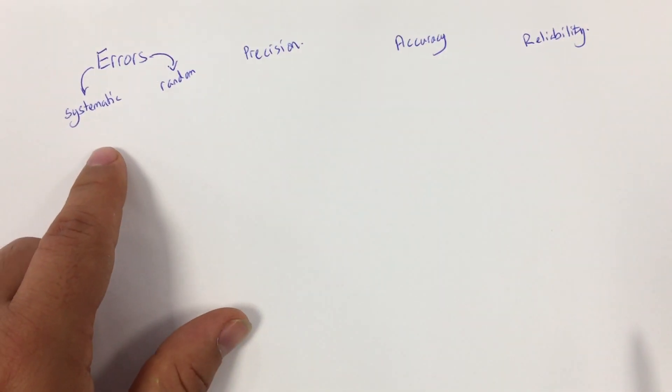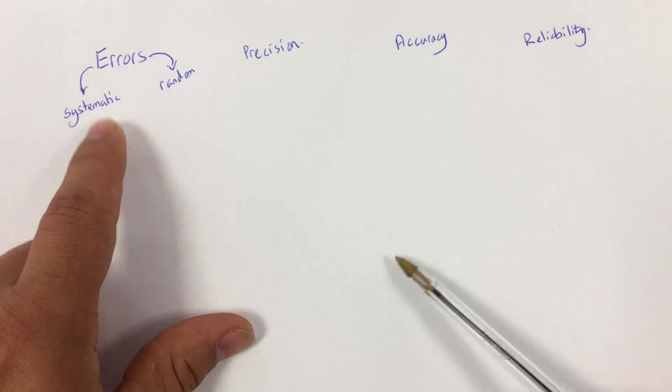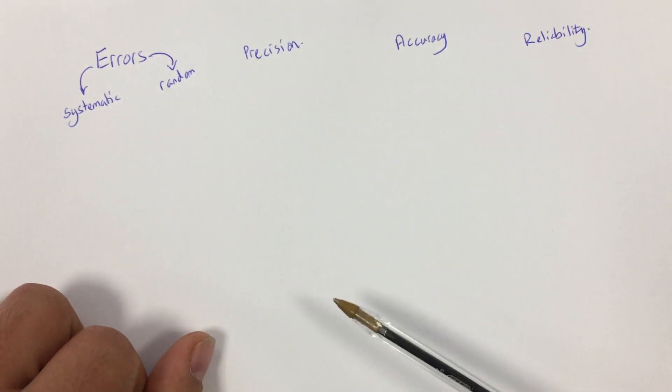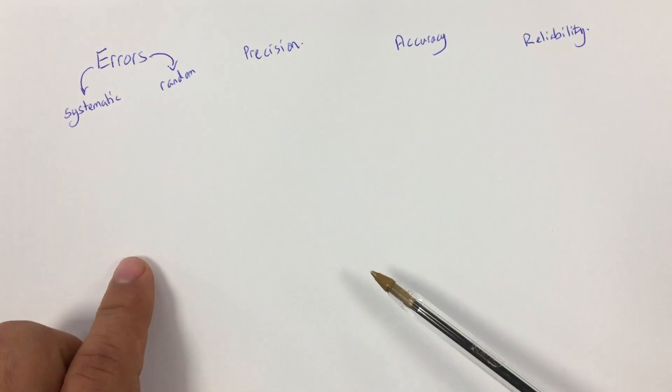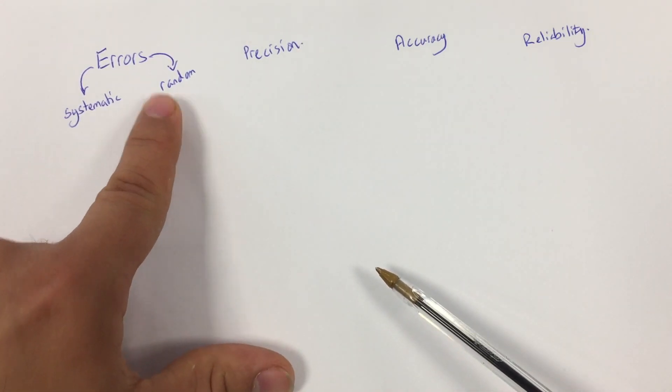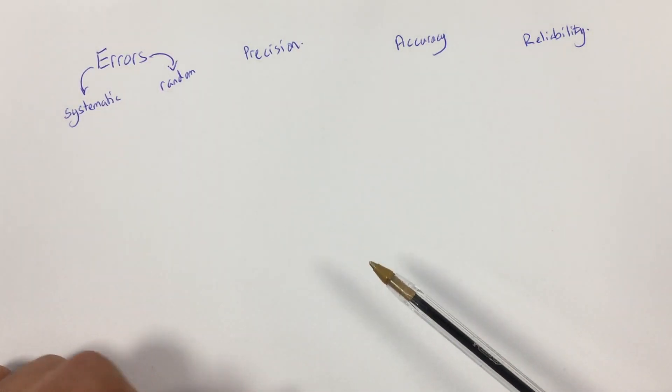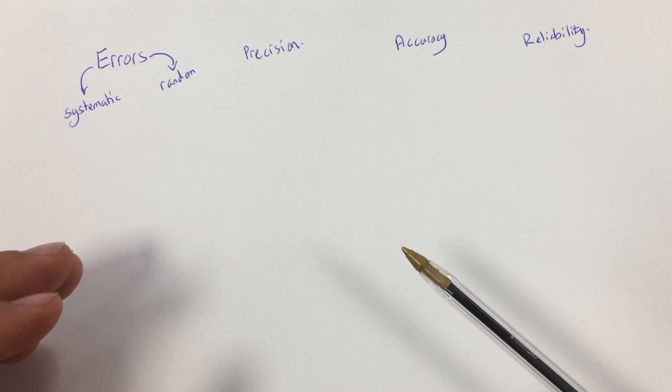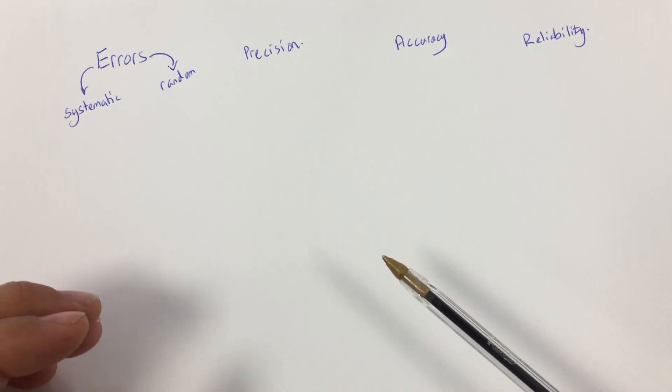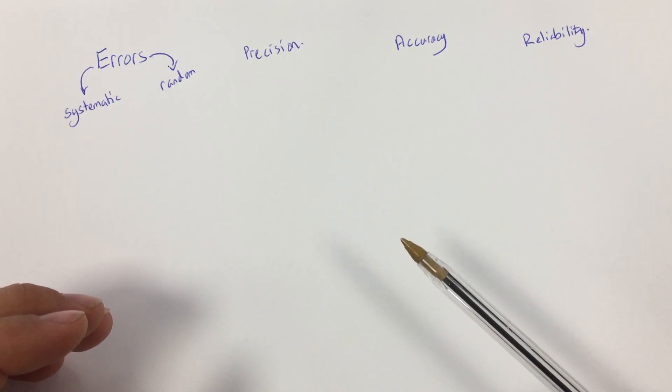So first of all, let's focus on errors. In any experiment we do, typically we consider two different types of errors, systematic and random. Now if we start with random error, random error is usually caused by subtle fluctuations or variations in the environment, and are often things that are ultimately just beyond our control.